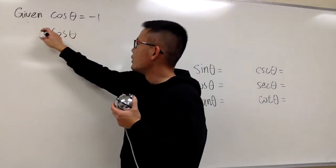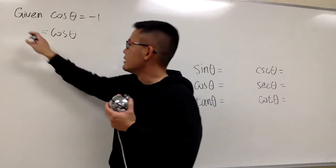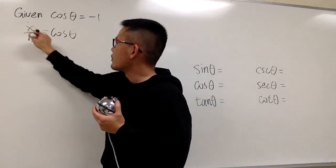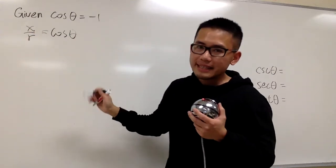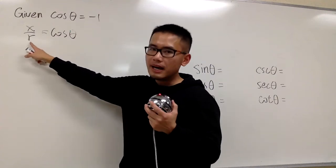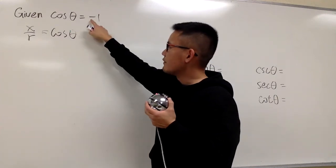cosine theta, we know on the x-y plane, this is x over r. And we know that r is always positive, and right here we have negative 1.